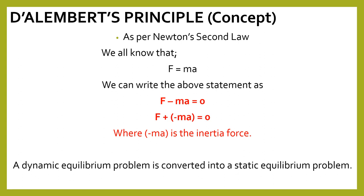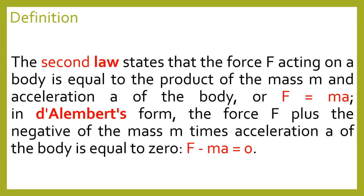The definition of D'Alembert's Principle: as per Newton's second law, force is equal to the product of mass and acceleration, that is F equals ma. In D'Alembert's form, the force F plus the negative of mass into acceleration is equal to 0. So finally the equation becomes F minus ma equal to 0, which is D'Alembert's principle or equation.